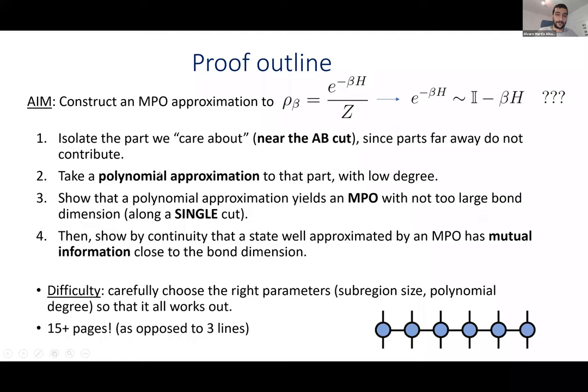So the silly Taylor approach gives an idea of what we want to do. There are a few steps, each containing some physical information. The first step is isolating the part we care about — the boundary. We need a way of isolating the Hamiltonian near the cut of interest. Once we isolate the boundary Hamiltonian, we can do a polynomial approximation. The lower the degree of the polynomial, the smaller the bond dimension of the tensor network. Then we show that given a polynomial approximation, we can construct an MPO with not too large bond dimension.